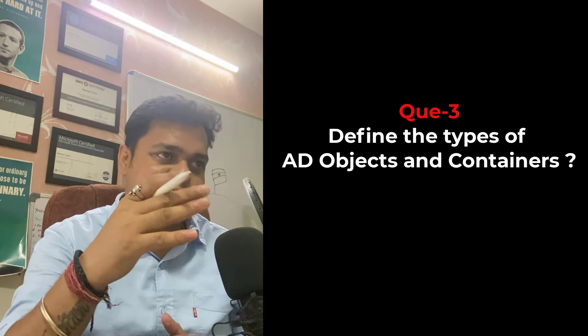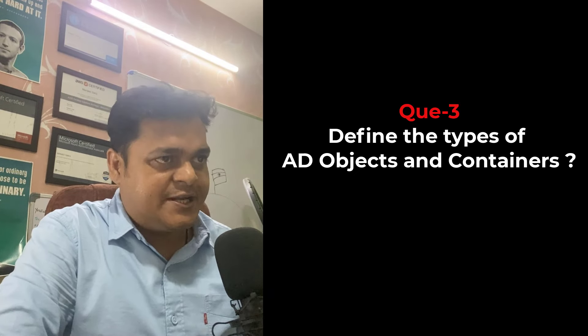Regarding the different types of objects and containers in Active Directory: the student has seen several options in Server Manager but doesn't remember the exact names. The instructor confirms: user, group, computer, shared folder, and printers — these are five different types of objects available. Domain, sites, and organizational units are the three different containers available. Five objects and three containers will be discussed in the boot camp.